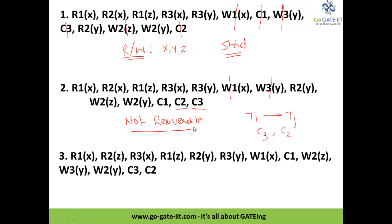This given schedule is not recoverable because the transactions W3y and R2y end in the form C2, C3. If W3y gets rolled back in the future, that update will be lost and the read performed by R2 will be reading a null or void value — there is no point in reading that lost update. So C2 before C3 doesn't make sense, and hence we cannot recover from such schedules.